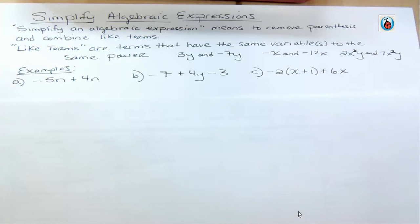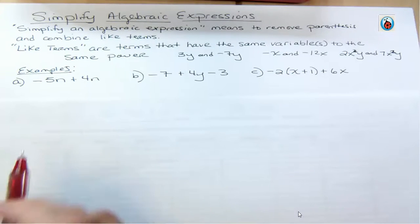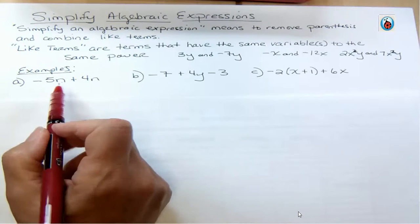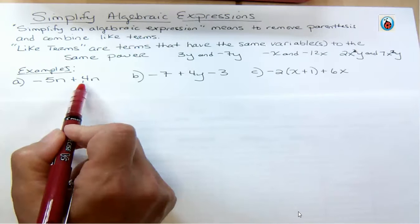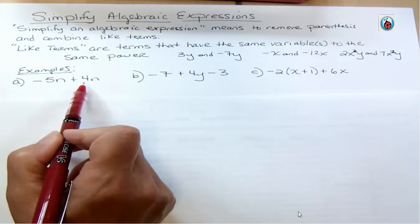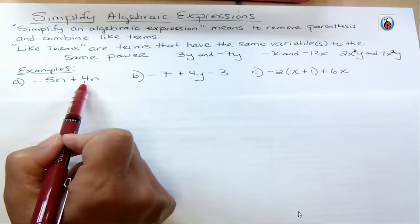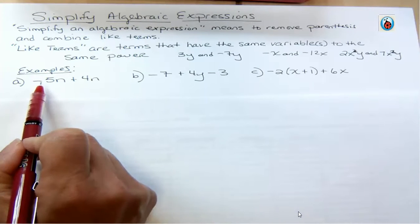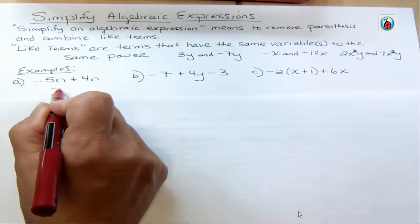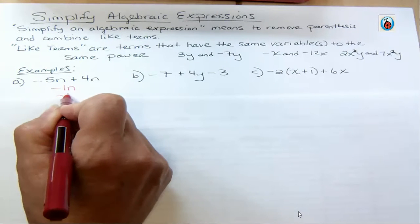In this first example we don't have any parentheses to remove — we're just combining like terms. We verify: do they both have n to the first power? Yes. When we combine like terms, we look at the coefficient in front. I have −5 and +4. I have more negatives by 1, so my answer is −1n, which I can just write as −n. I don't need to show that −1.